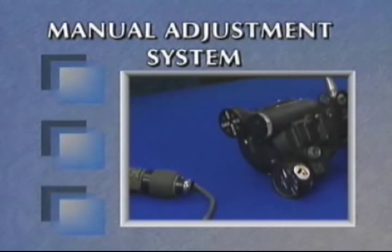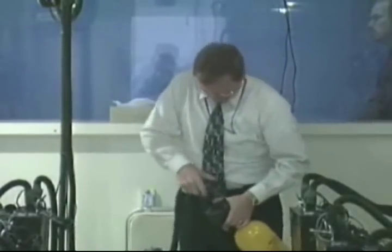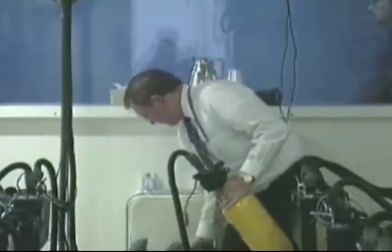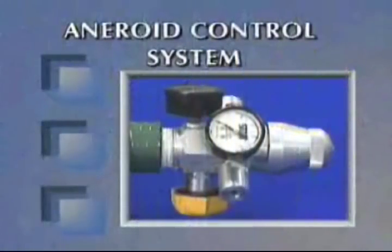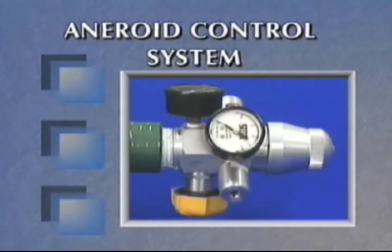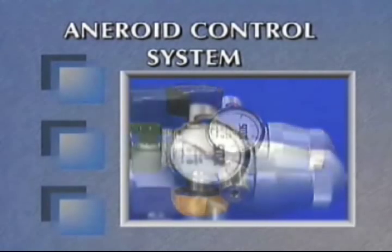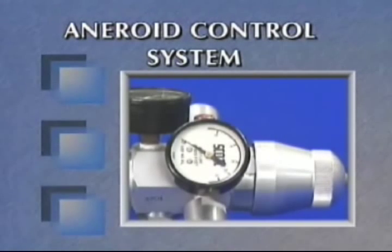The second type of continuous flow regulator incorporates a manual adjustment knob. This allows the user to increase or decrease the oxygen flow rate corresponding to aircraft cabin altitude or physical exertion, ensuring proper blood oxygen saturation and efficient use of the oxygen supply. The third type uses an aneroid control to automatically increase or decrease the oxygen flow rate, corresponding only to the aircraft cabin altitude.